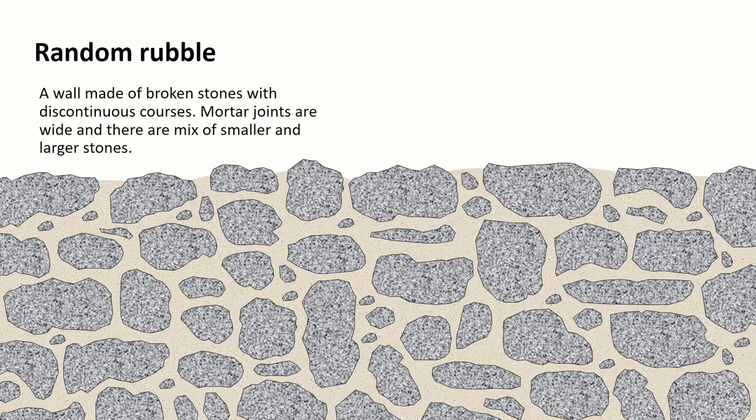Starting at the bottom end of quality we get random rubble which is a wall made of broken stones with a discontinuous course and the mortar joints are wide, very visible and there's a mix of smaller and larger stones. There probably is some coursing within a random rubble wall but if you were following lines at the bottom of stones or through mortar joints you would probably find that it breaks quite often and there were a mix in different size and quality of stones.